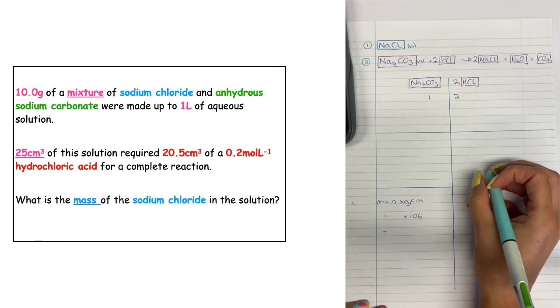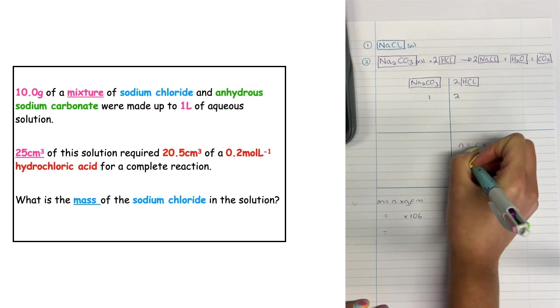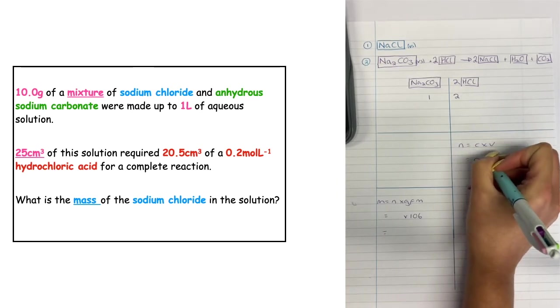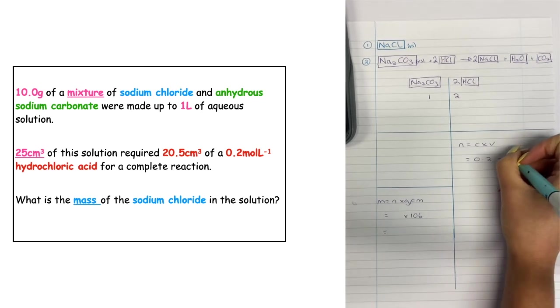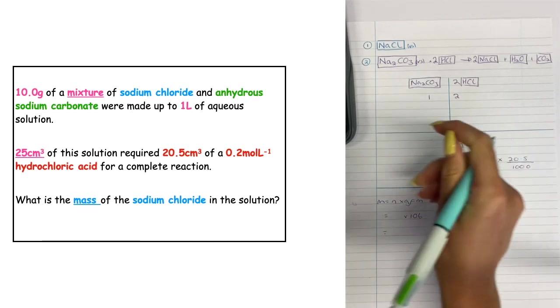Number of moles is equal to C times V. The concentration we're given as 0.2 and the average titer is 20.5, and we divide that by a thousand to put it into liters. So 20.5 divided by a thousand times by 0.2.